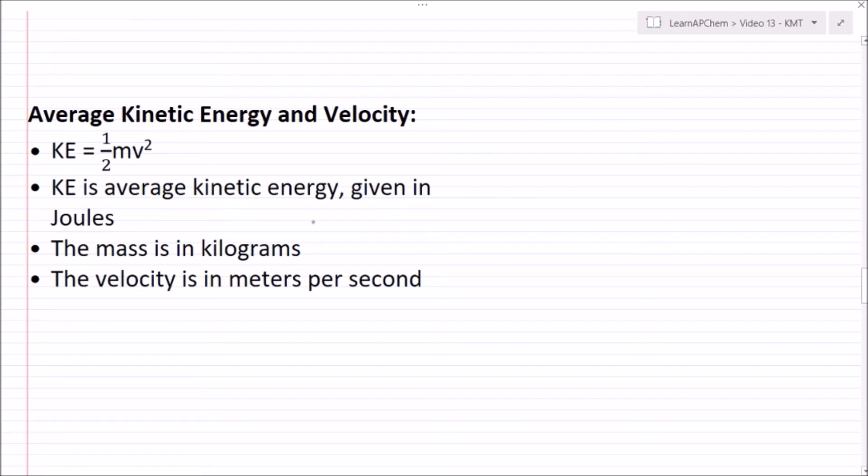Now KE is our average kinetic energy given in joules, and mass is given in kilograms, and velocity is in meters per second.